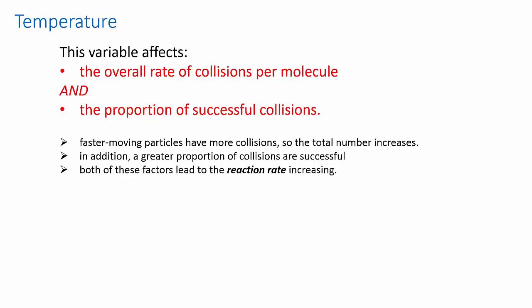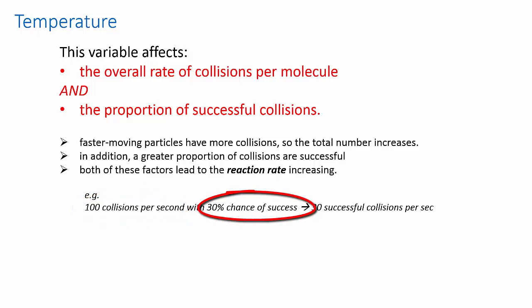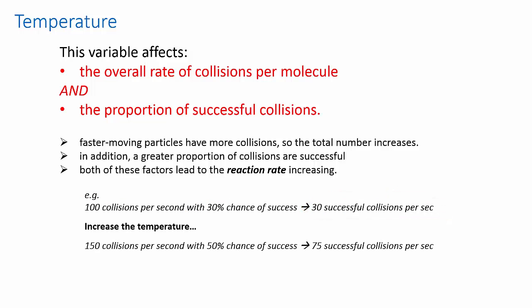A simple set of numbers to help you visualize what's going on. Imagine as before that you would initially have 100 collisions per second with a 30% chance of success, giving you on average 30 successful collisions per second. But if you increase the temperature, you might get to a situation where you had 150 collisions per second, so you've increased the overall rate of collisions, and you now have a 50% chance of success. So your chances of a successful collision have also increased. And that would then give you an overall average rate of 75 successful collisions per second. So increasing the temperature definitely increases the rate of reaction.